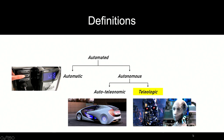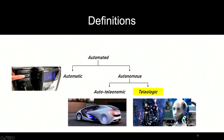Then we have teleologic machines, which do not actually exist in practice — they only exist in theory. This is how the majority of people imagine artificial intelligence: some sort of Terminator, or like the robot Sunny from a film. This is a machine that can not only identify each step to reach a purpose, but can also define its own purpose. When we talk about autotelenomic algorithms, we're talking about machine learning and deep learning algorithms that already exist. Teleologic machines — we are not there yet, and I don't think we will be in the near future, but it's something humanity constantly thinks about.